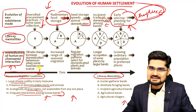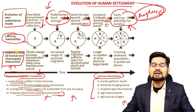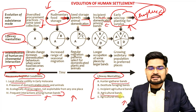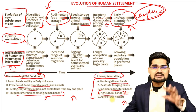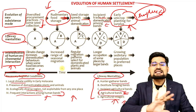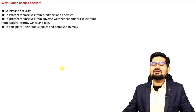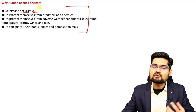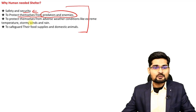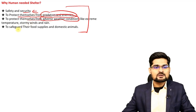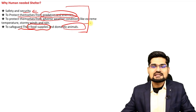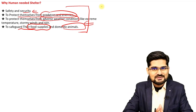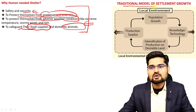In terms of life way mentalities, the shift was from hunter-gatherer bands to agricultural conversions — agricultural bands of people settled down and agricultural villages began to develop. Settlements were needed for safety and security, food availability, protection from predators and enemies, protection from adverse weather, and to safeguard food supplies and domestic animals. These were the first kinds of thought processes — the developing mentalities — that led to the creation of larger settlements.